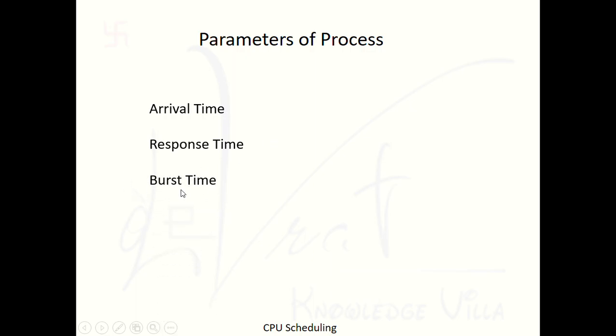Burst Time is how much time a process requires the CPU. Like traveling from Ahmedabad to Baroda takes two to three hours — that journey time is the burst time analogy. If a particular process requires the CPU for 10 milliseconds, then 10ms is the burst time. It is the total amount of time a process needs to use the CPU.